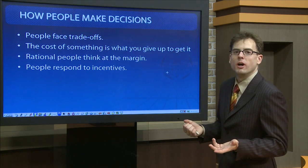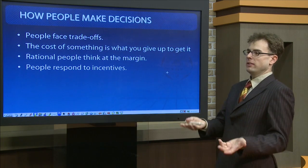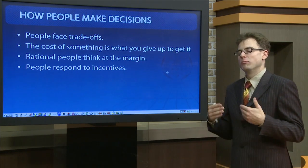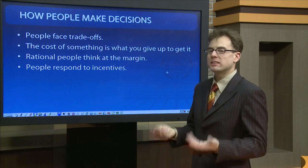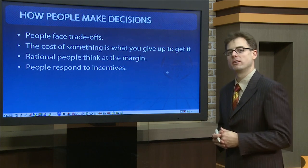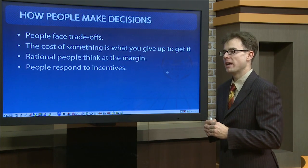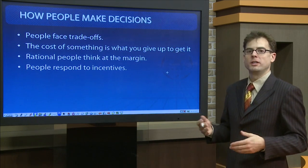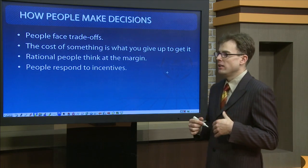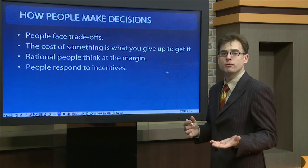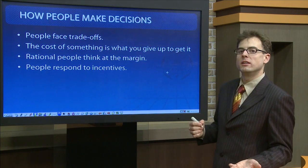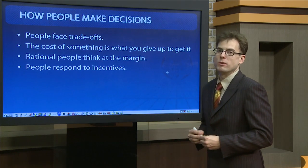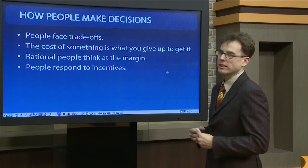Think for example of seat belt laws. The intended consequence is that drivers who wear seat belts will be less likely to die if an accident occurs. The unintended consequence is that drivers might feel more comfortable driving faster and more recklessly, so the number of accidents might increase. So even if people are less likely to die in an accident, there is the unintended consequence that more accidents may occur.